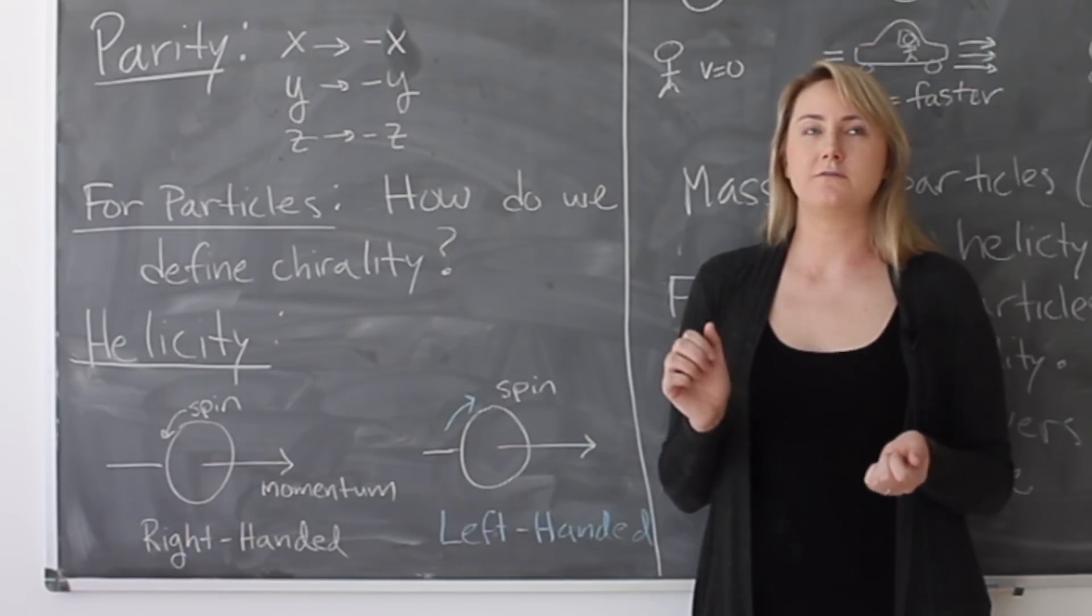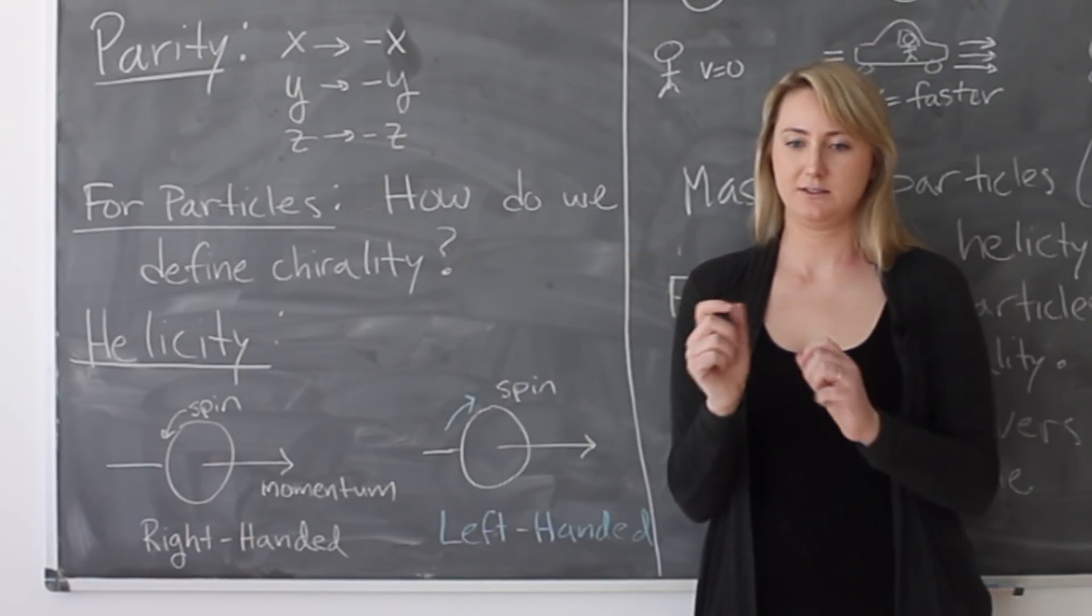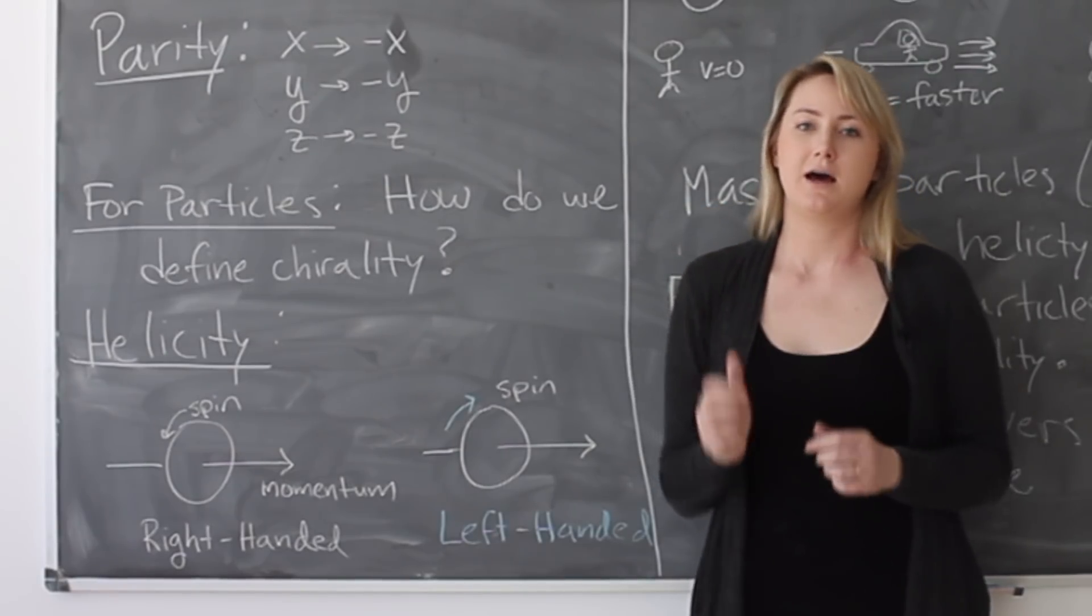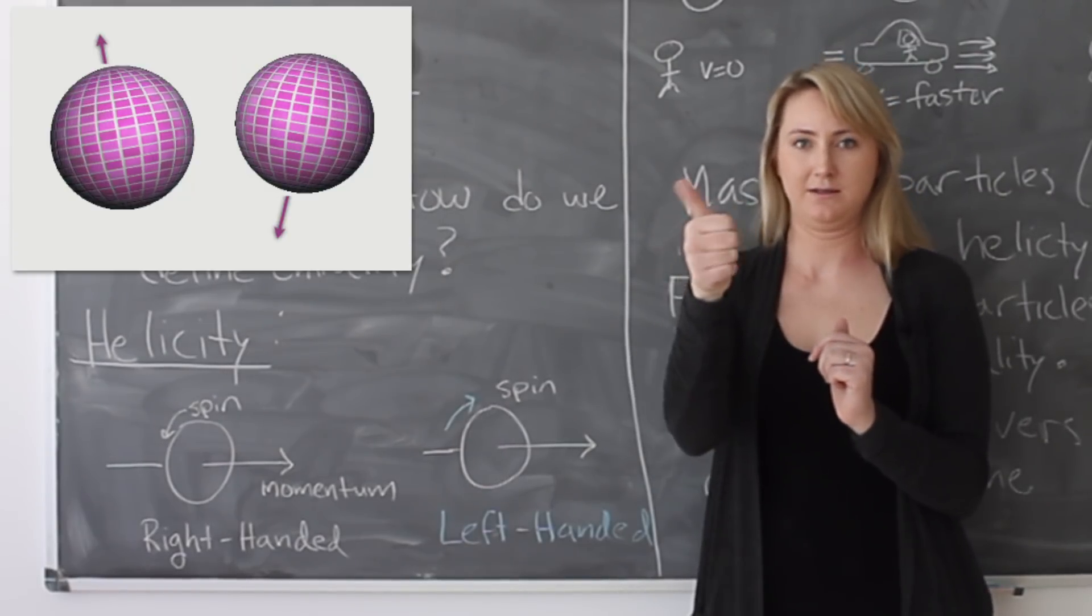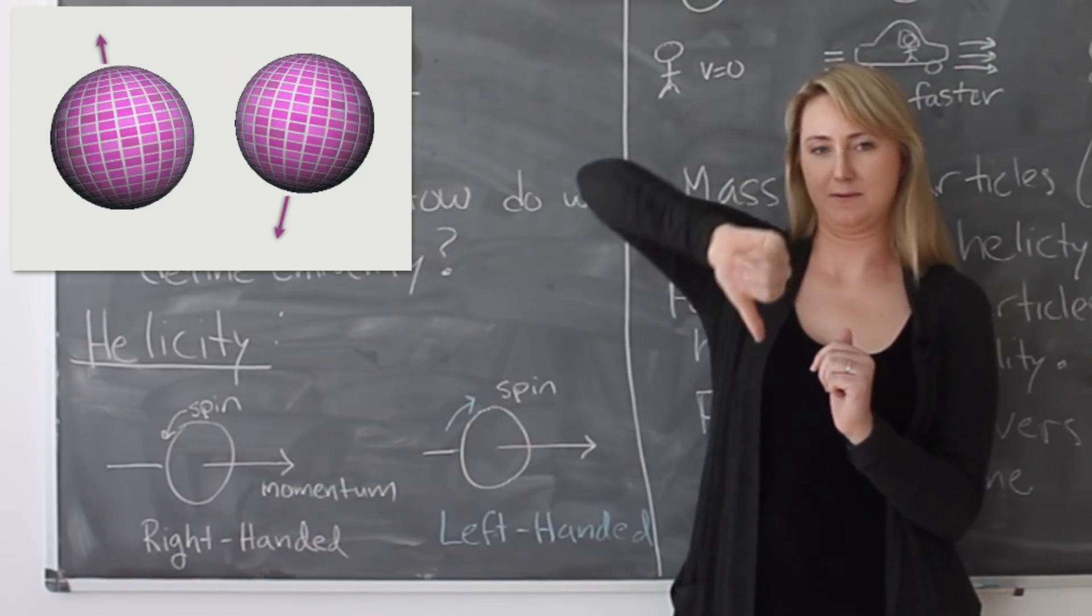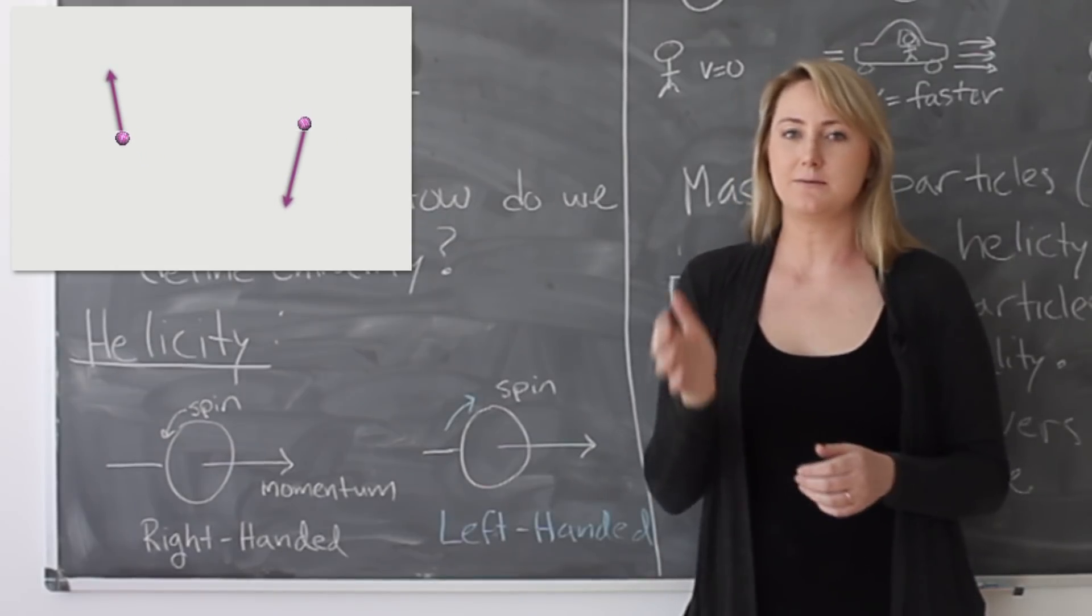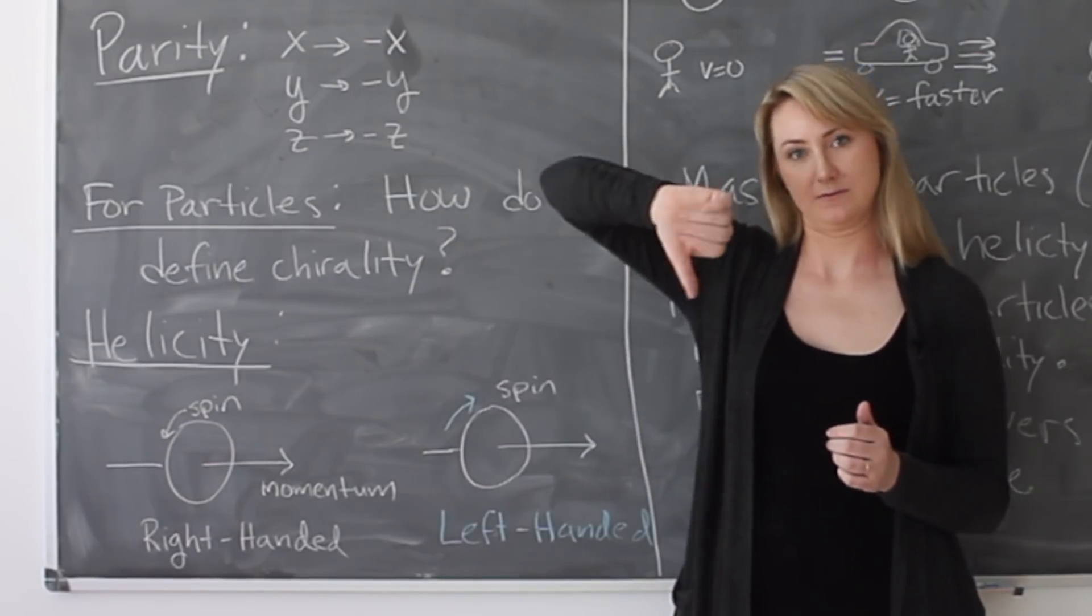And while you can sort of imagine spin as being rotation about an axis, so you can think of a particle as being like a little top that spins. If it's spinning this way, it's spin up. And if it's spinning this way, it's spin down. That's not precisely what's going on quantum mechanically, but it's a good way to think about the direction of spin.